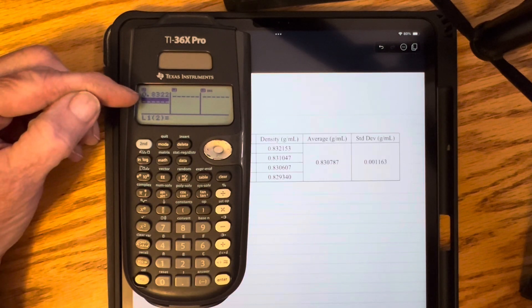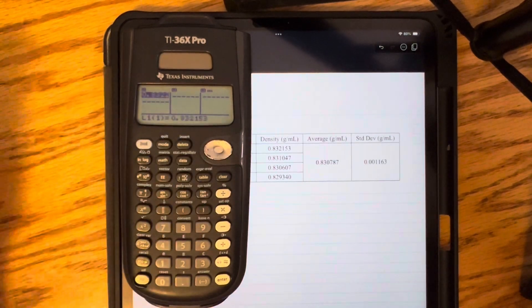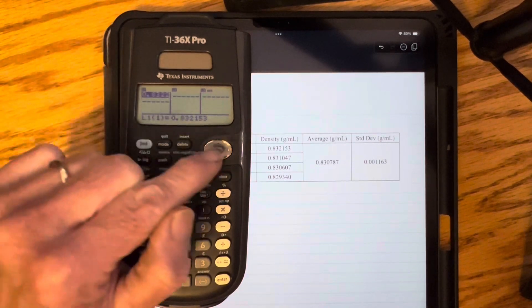It's not going to show all the digits, but if I go up and highlight that, I can see that all the numbers are still there.